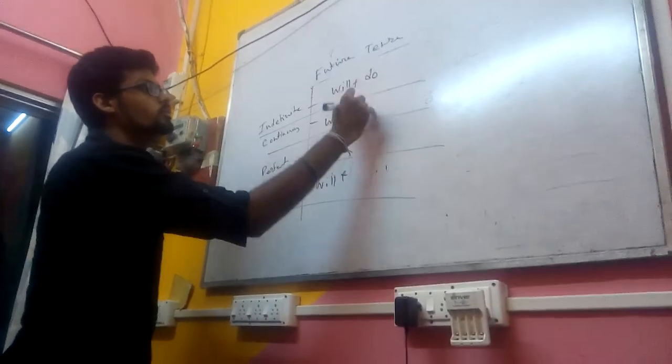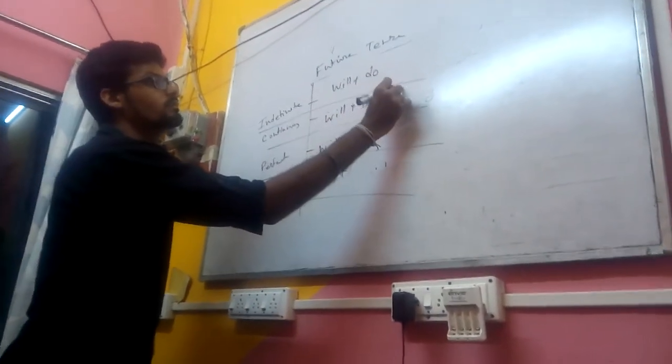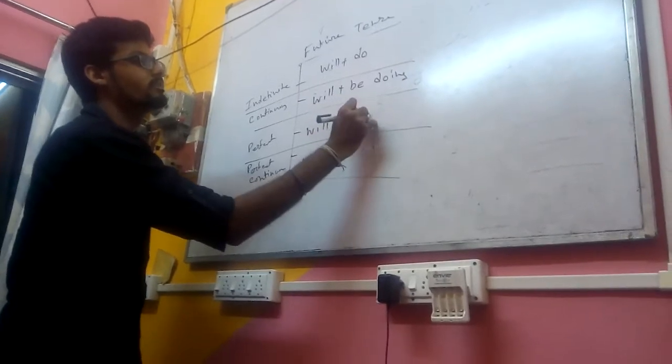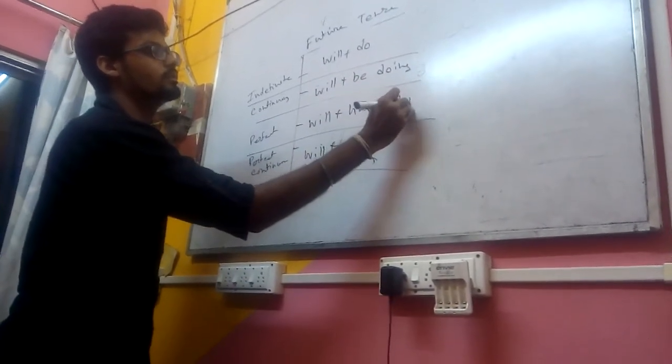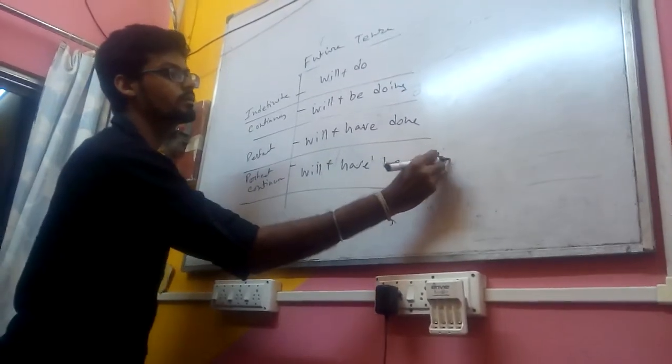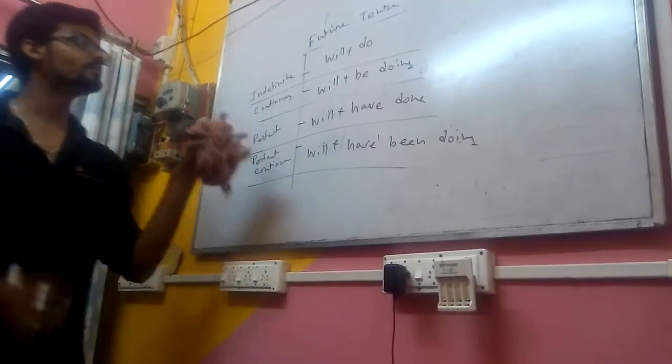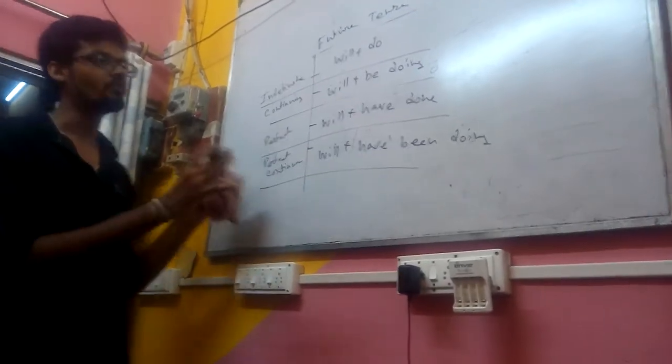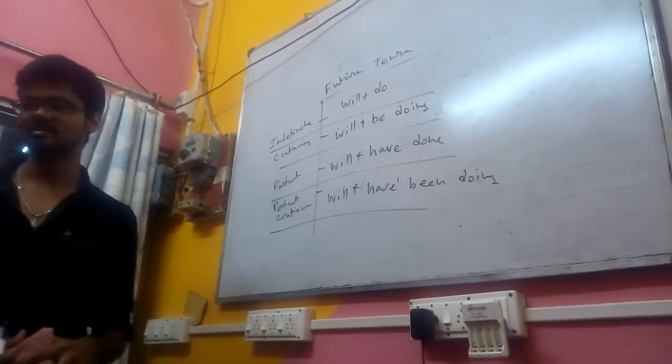'Will do,' 'will be doing,' 'will have done,' 'will have been doing.' These are the basic structures of tense. That's it.